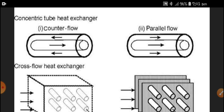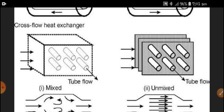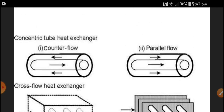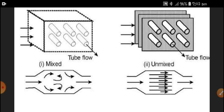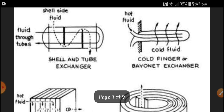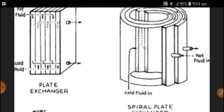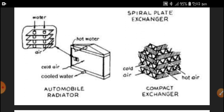Here we have other types of heat exchanger: concentric tubes (counter flow and parallel flow), and cross flow heat exchanger. In the cross flow heat exchanger, there are two types — mixed and unmixed. If unmixed, there are two tubes; if mixed type, there are no tubes. Other types include: shell and tube type, cold finger or bionant exchanger, plate exchanger, spiral exchanger, automobile radiator, and compact exchanger. These are all types of heat exchangers used in practice.